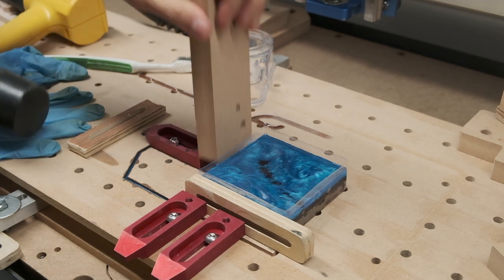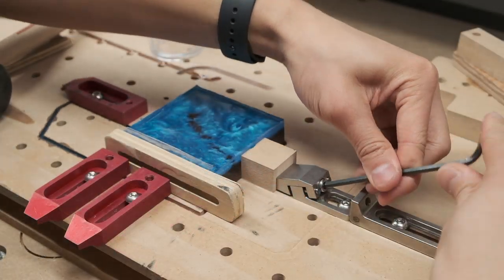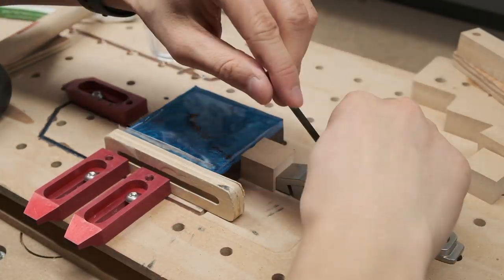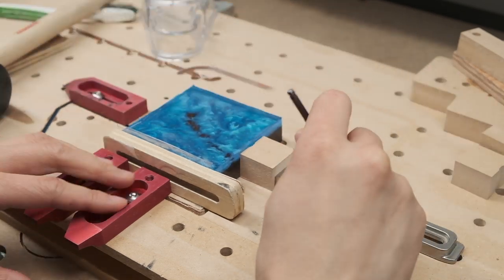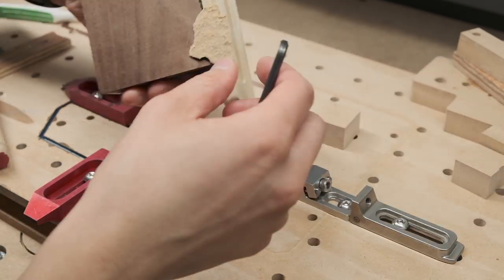So once everything had set, I pried my piece off the table, or I tried to. Pro tip, you should always put a layer of packing tape underneath your pour because you never know when you'll get a little bit of epoxy leakage.